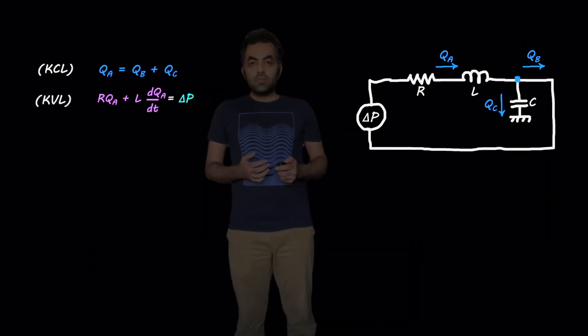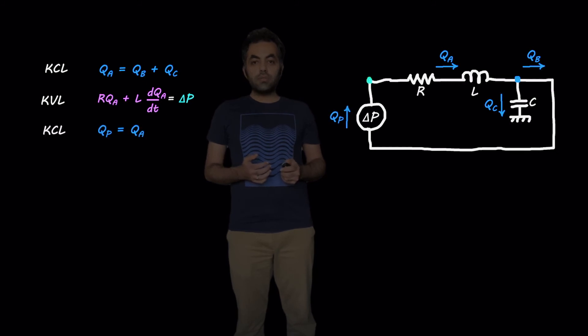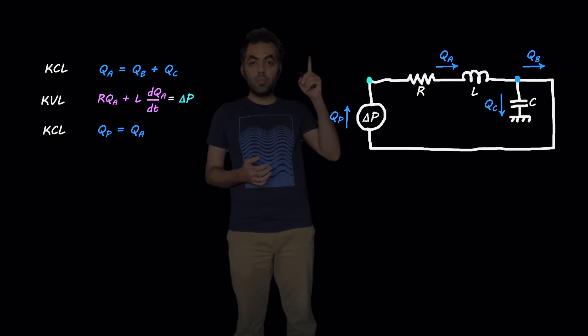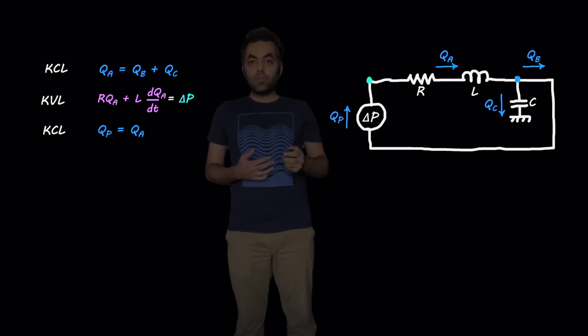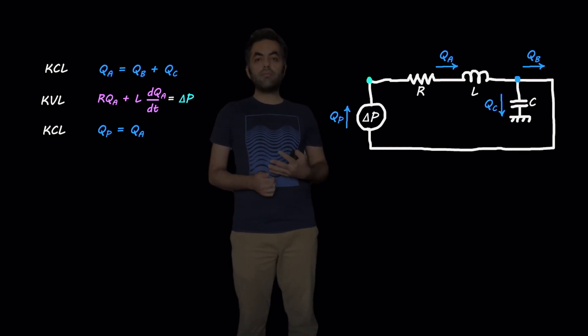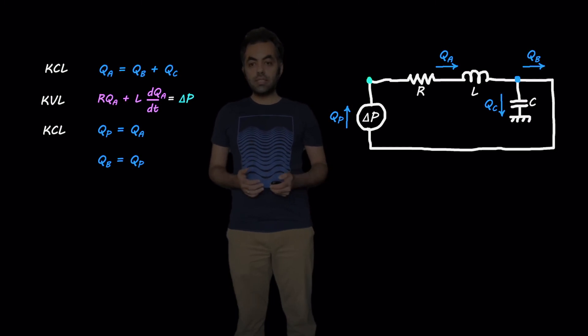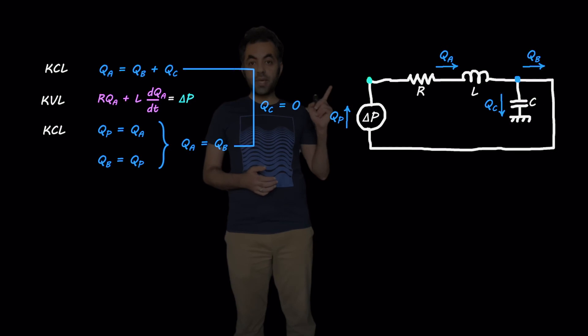So, in addition to these two equations, we can also apply KCL to other nodes. For example, this node on top of the pump that we have here. The flow rate entering this node is Qp, or the flow rate that goes through the pump, and the flow rate leaving this node is Qa. Therefore, we get Qp equals Qa. Also, if you look at Qb, the path of Qb all the way to the pump, we can see that there isn't any branch here, and also there shouldn't be any flow leakage. Therefore, Qb equals Qp. And looking at these two equations, we can see that Qa equals Qb. And then comparing it with the first equation that we have, we can conclude that Qc in this specific circuit is zero.